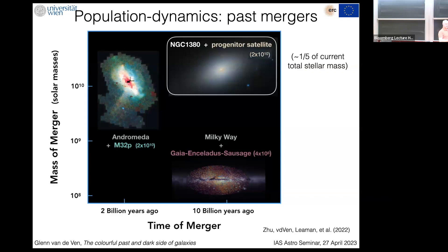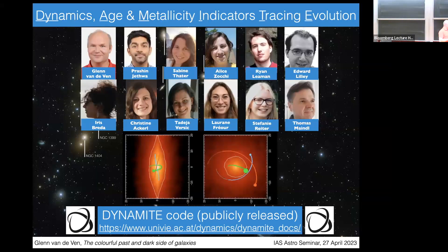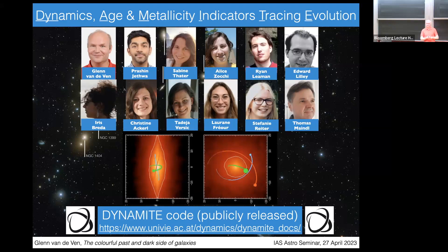In summary, we can now start placing ancient major mergers on the time-versus-mass diagram — extending galactic archaeology to external galaxies. This is the work of a large group, and we publish our code publicly. We give regular workshops, including one recently in Australia. If people are interested, more details are available.